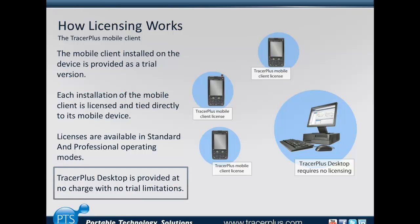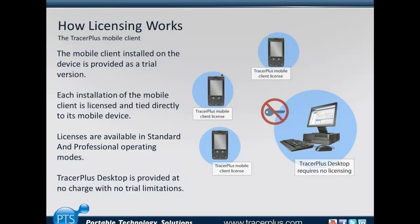Tracer Plus Desktop, which is the tool that can automatically register all of your devices out in the field, is provided at no charge and there's no registration associated with that piece of software. So again, they're registered per PDA — each PDA out in the field would have the mobile client installed and each one would be registered with the registration code issued from us. The trial software that you install will be unlocked once you enter the registration code.